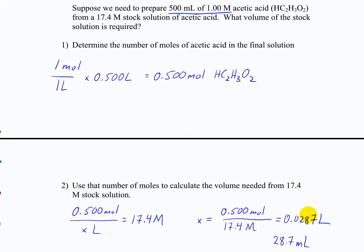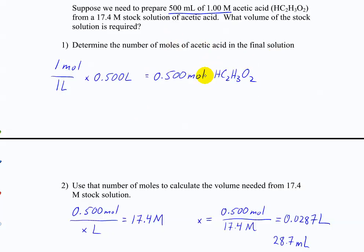We take 28.7 milliliters of this high-concentration stock solution and mix it with enough water to bring the total up to 500 milliliters. Then we have 500 mL of a 1 molar solution because the number of moles stays constant — 0.5 moles from the 28.7 mL stock solution remains 0.5 moles in the final 1 molar solution.